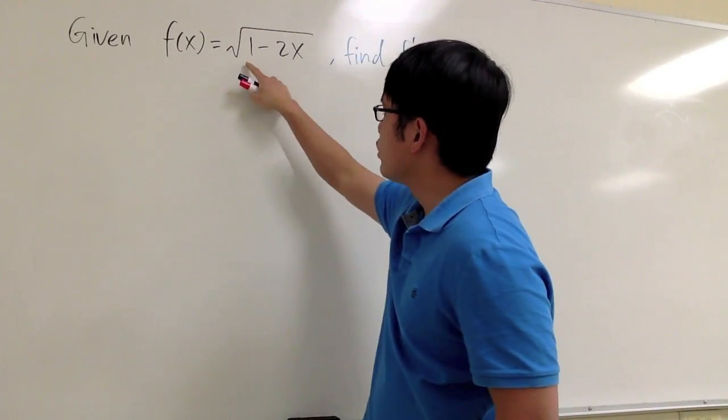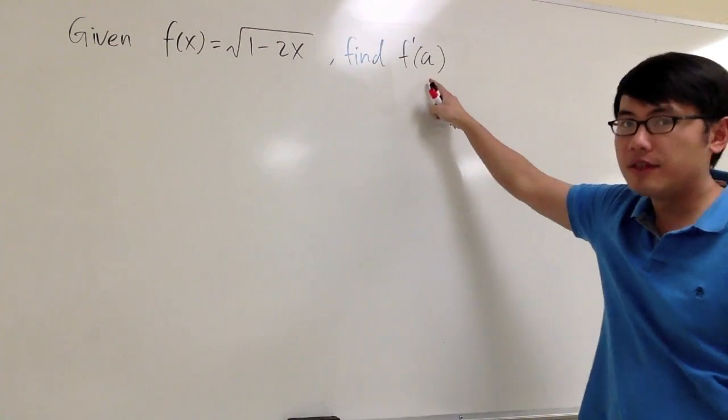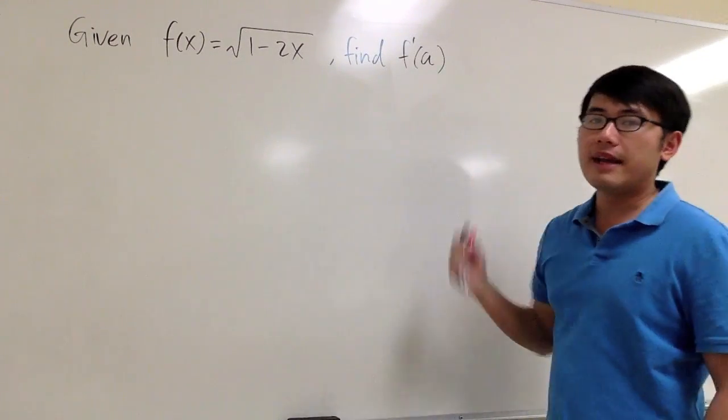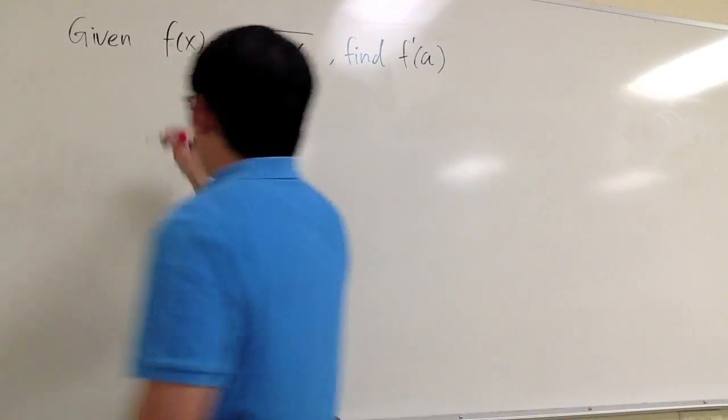We have defined the function f of x equal to square root of 1 minus 2x, and we are going to find f prime of a — the derivative of that function at x is equal to a — and we will use the definition of the derivative.